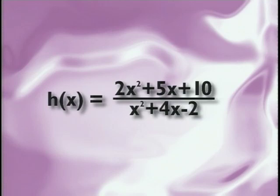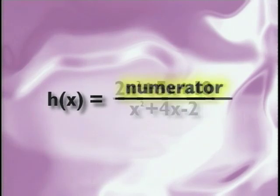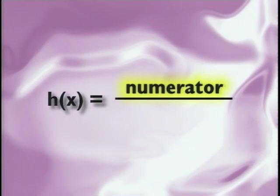Like with numerical fractions, the top of a ratio of polynomials is called the numerator, and the bottom is called the denominator.